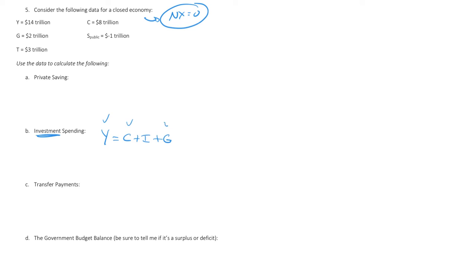We know Y equals C plus I plus G. And we have Y, we have C, we have G. So we can solve for that investment. We could rewrite this and say investment is equal to Y minus C minus G. Y was equal to 14, C was equal to 8, G was equal to 2. That's 14 minus 10. That tells us investment is equal to $4 trillion.